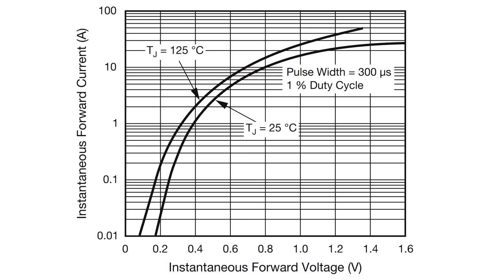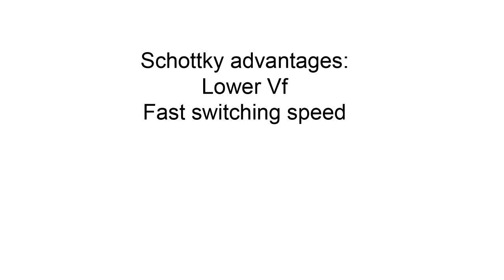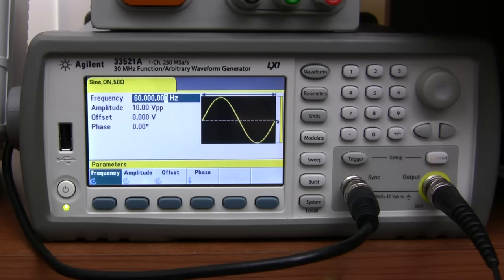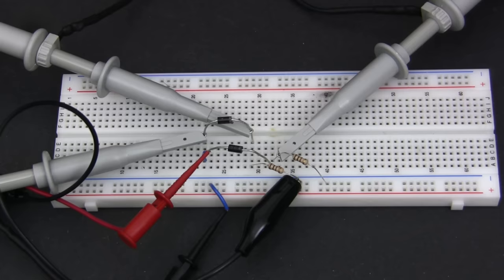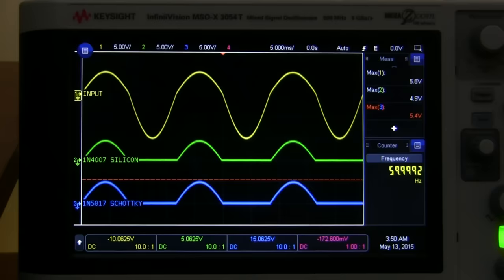Are there any other advantages of Schottkys? Well, they tend to have very fast switching speeds so you can use them at higher frequencies. I have a demo setup here where I'm generating a 60Hz sine wave, and I'm feeding it into two different types of diodes, a 1N4007 silicon diode and a 1N5817 Schottky diode. These diodes are very common and I'm just using a couple of resistors for loads.